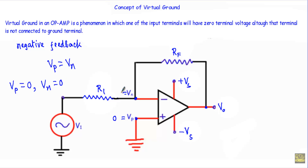When we connect any terminal to the ground terminal, that terminal voltage reduces to zero volts. But here, this inverting terminal is not connected to the ground terminal, yet it has a voltage of zero volts — it is staying at ground voltage.